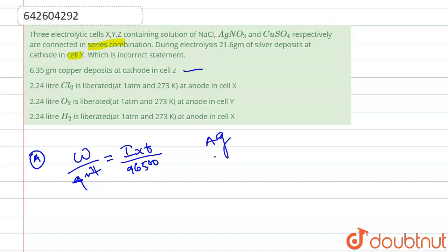For Ag, there is 21.6 gram of silver deposited at cathode. So 21.6 upon 108, which is equivalent weight, and we'll divide this by one because it is its n factor.